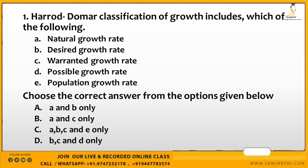The options for this question are: A and B only, A and C only, A, B, C and E only, B, C and D only. In the Harrod-Domar model, the classified growth rates are natural growth rate and warranted growth rate. Desired, possible, and population growth rates are not part of this model. The answer is Option B: A and C only.